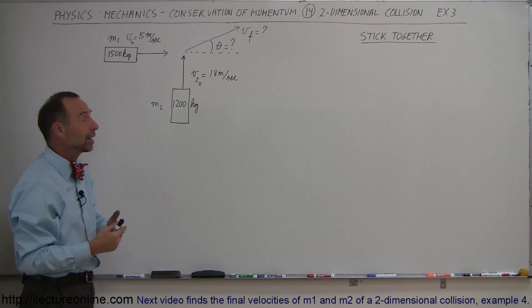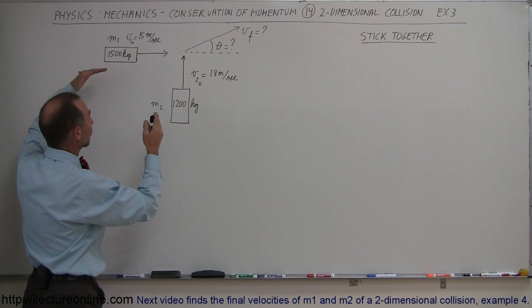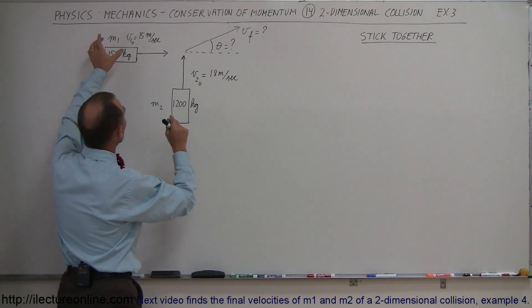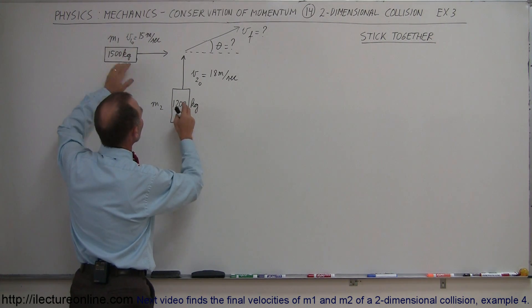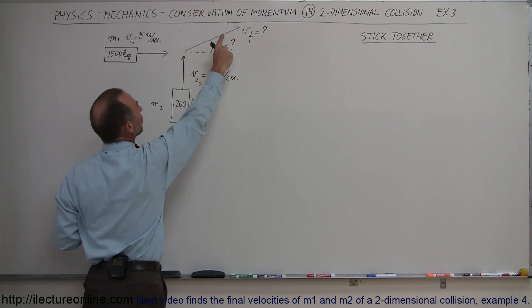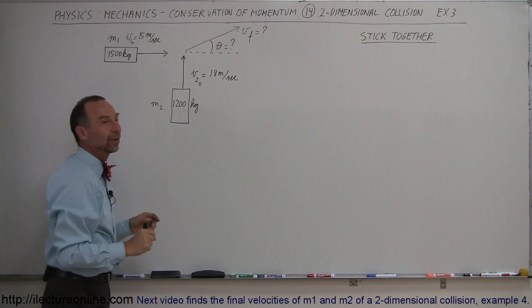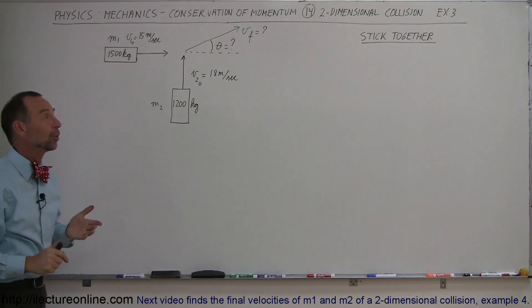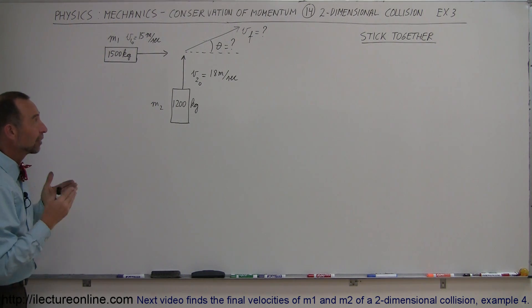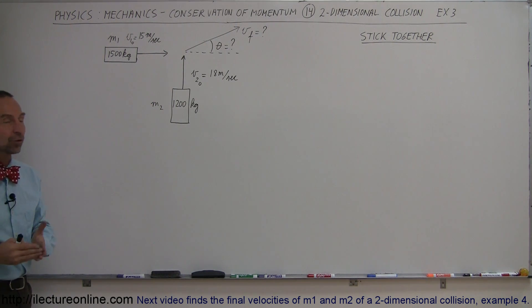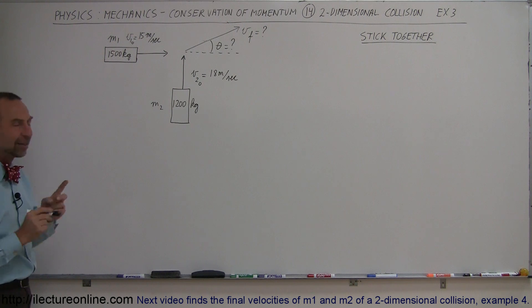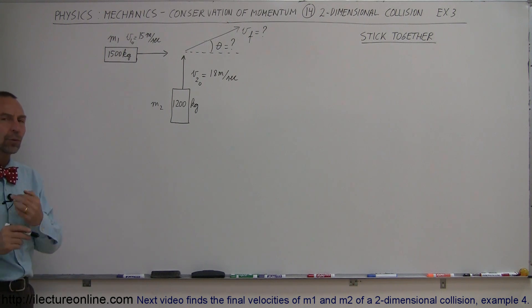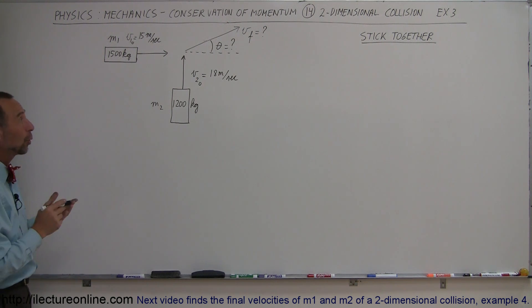We're first told how fast they're moving and what their masses were, and we're supposed to figure out what their final velocity will be and the final direction of their motion when they stick together. Since there are two unknowns, we're going to need two equations.